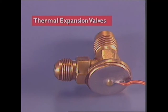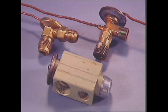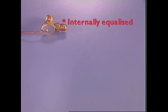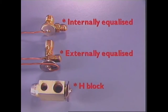The thermostatic expansion valve, or TX valve, is constructed of cadmium-plated steel or aluminium. Three types are commonly used: internally equalized, externally equalized, and H-block.